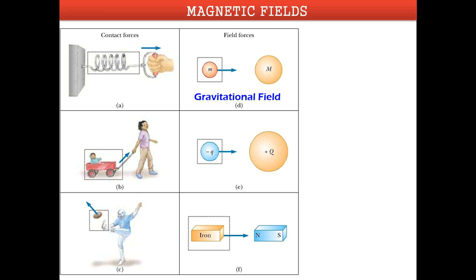Because the Moon is inside this gravitational field, it will be attracted by the Earth. The second kind of field force is the electric force, which acts between charged particles — positive or negative. A charge produces an electric field around itself; if another charge enters that field, it will be attracted. The third type is the magnetic force.